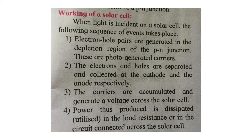While the junction is forming, a depletion layer and potential barrier build up because of the crossing of majority carriers across the junction. When photons of energy greater than the band gap — i.e., hν > Eg — are incident on the cell, the photons are absorbed and electron-hole pairs are generated. The barrier potential segregates them and pushes electrons to the n-side and holes to the p-side.